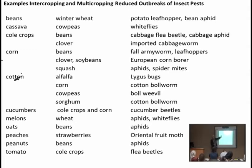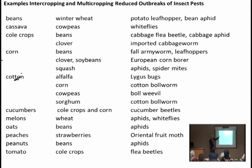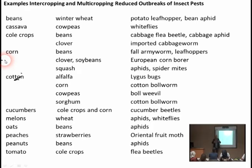للذرة (corn) يمكن زراعة الفاصولياء والكلوفر والكوسة (squash) بينها لمكافحة الآفات المختلفة. الذرة ضيقة الأوراق تزرع بينها الكوسة أو القرعيات عريضة الأوراق لأن حشرات مثل الأفيد والسبايدر مايت تتجمع على الأوراق العريضة دون أن تؤدي نفس الضرر كنقل الأمراض الفيروسية للذرة.